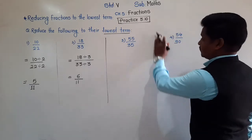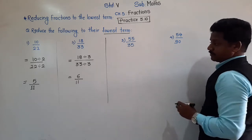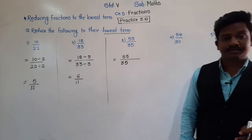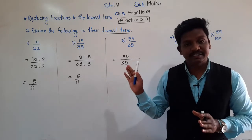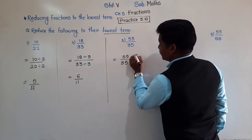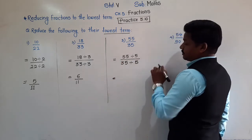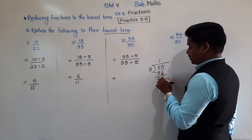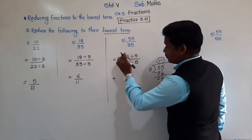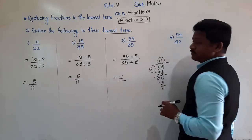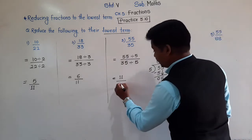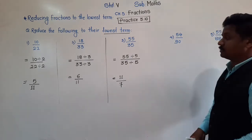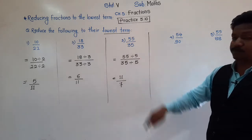Third example: 55 upon 35. Check whether 55 and 35 are divisible by the same number. Their last digit is 5, so they are divisible by 5. Divide both by 5: 55 ÷ 5 = 11 and 35 ÷ 5 = 7. So we get 11 upon 7. Since 11 and 7 are not divisible by any other common number, 11 upon 7 is the reduced form of 55 upon 35.